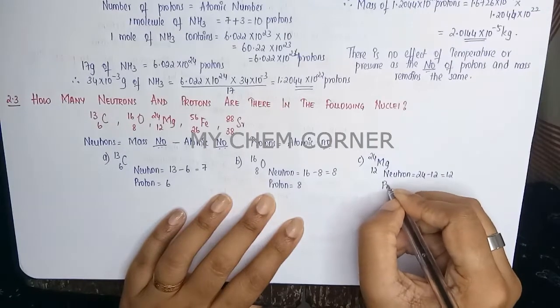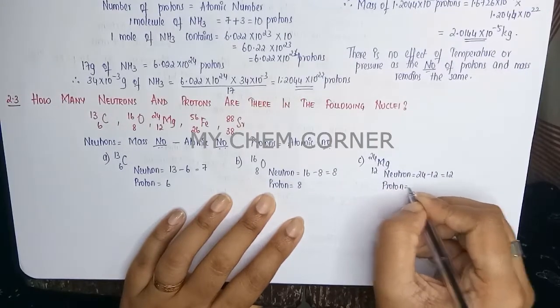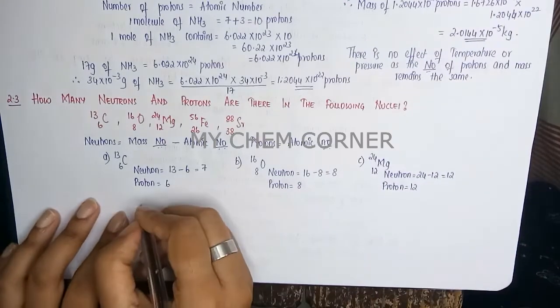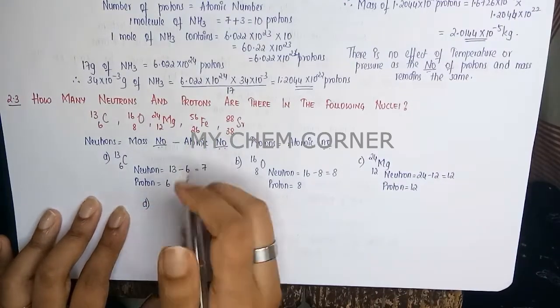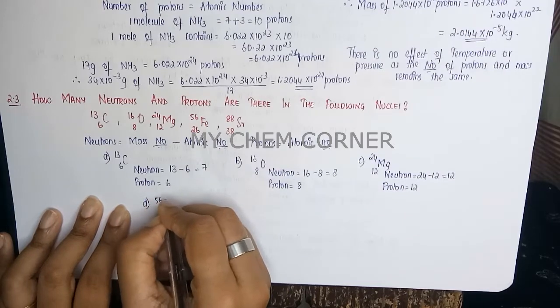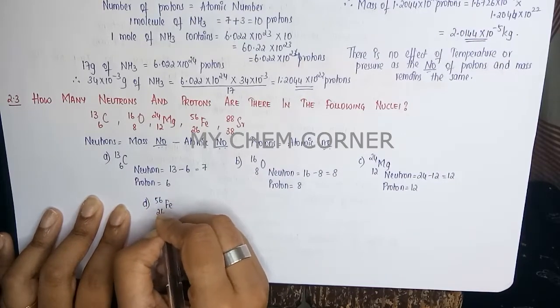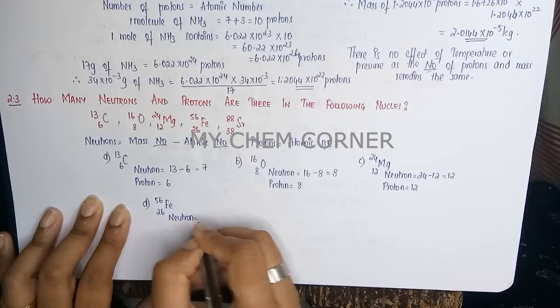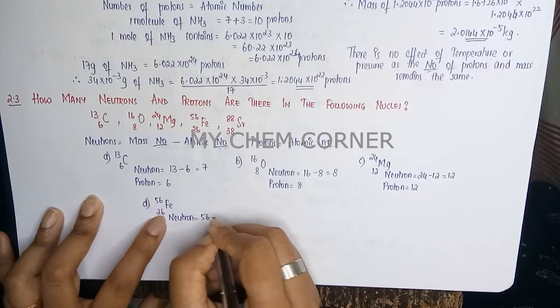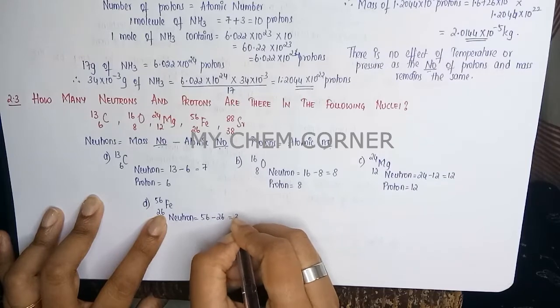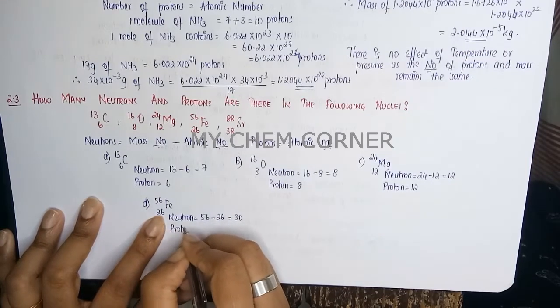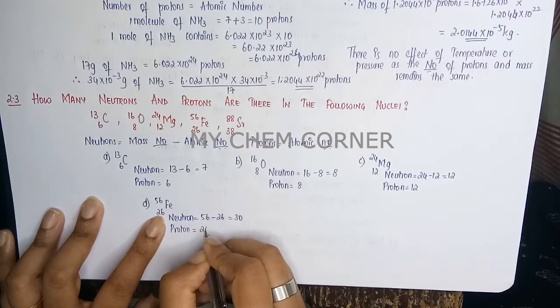Now the next one is for Iron 56 and 26. Neutron is atomic mass minus the atomic number, this will be 30, and proton is just the atomic number, 26.